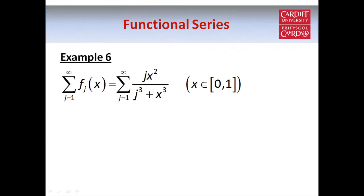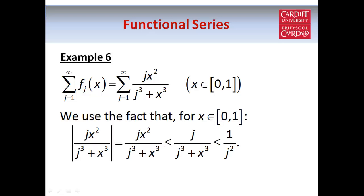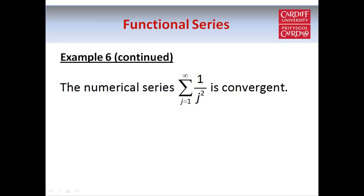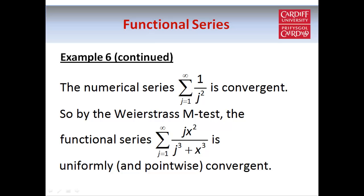Now we're going to look at examples where we can apply the Weierstrass M-test, which involves comparing the functional series to a series of numbers known to be convergent. In this example the domain is the closed interval from zero to one. Each term in our functional series is bounded above by one over j squared, because x squared is less than or equal to one when x is between zero and one, and because x cubed is non-negative so removing it from the denominator only increases the value. Since the series of one over j squared is a convergent series of numbers, by the Weierstrass M-test our functional series is uniformly convergent, and of course also pointwise convergent.